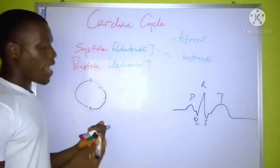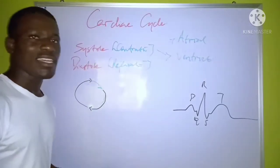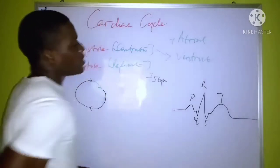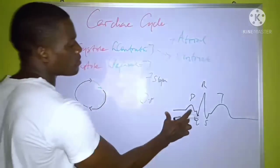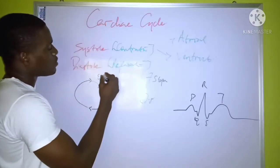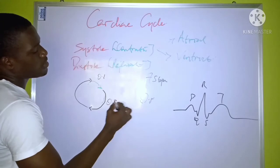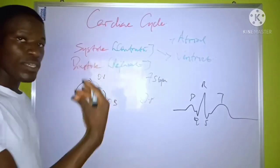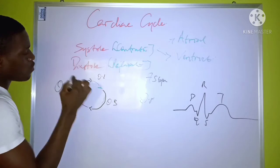That's a complete relaxation of both the atrium and the ventricles. Taking a heart rate of about 75 beats per minute, a cardiac cycle will take about 0.8 seconds for one cycle to be completed. The atrial systole takes about 0.1 seconds, the ventricular systole takes about 0.3 seconds, and the relaxation of the cardiac muscle takes about 0.4 seconds to allow the chambers to refill with blood.